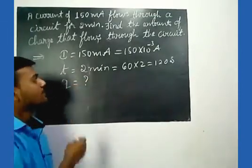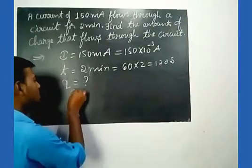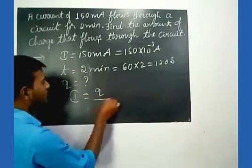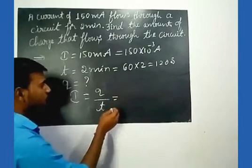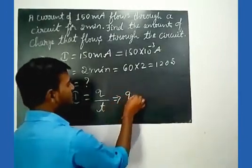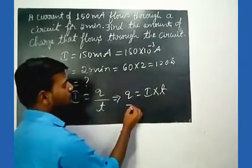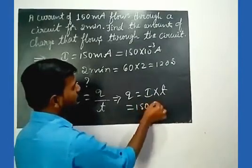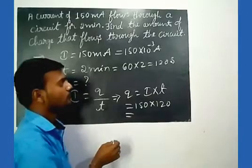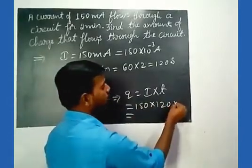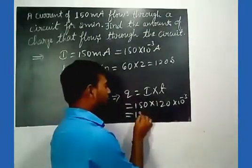The relation between current, time, and charge is I = Q / t, which implies Q = I × t. Substituting the values: Q = 150 × 10 to the power minus 3 into 120. Multiplying, we get 18000 × 10 to the power minus 3.